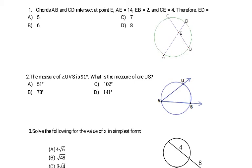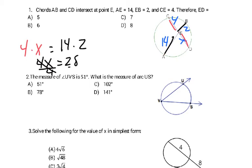So the last part of this test was reviewing circles. First thing always, label what you're given. AE is 14. EB is 2. CE is 4. And you're trying to find ED. And all it is is it's part times part. So 4 times x equals part times part. So 14 times 2. So you have 4x on this side. 14 times 2 is 28. Divide by 4. And you're left with 4.